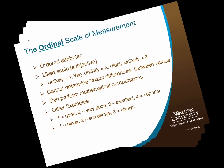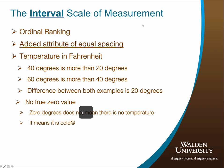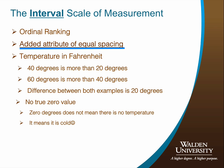Now let's address the interval scale of measurement. The interval level, like the ordinal scale, has variable attributes that are also ordered. However, in addition to ordinal ranking, the spacing or values between interval variable attributes is equal. For example, most basic statistics texts use the example variable of temperature in degrees Fahrenheit to explain the attribute of equal spacing. One can not only indicate that 40 degrees is more than 20 degrees, but it is also valid to say that the distance between 60 degrees and 80 degrees is the same as the distance between 80 degrees and 100 degrees.